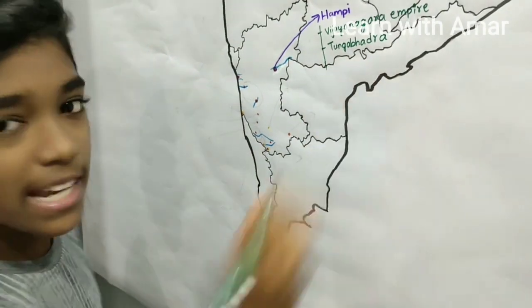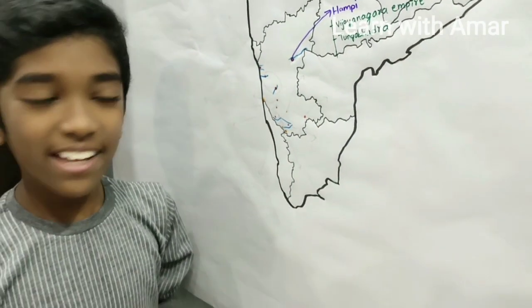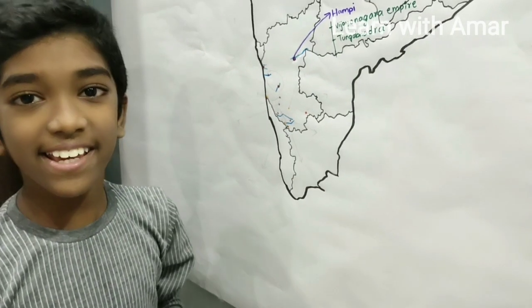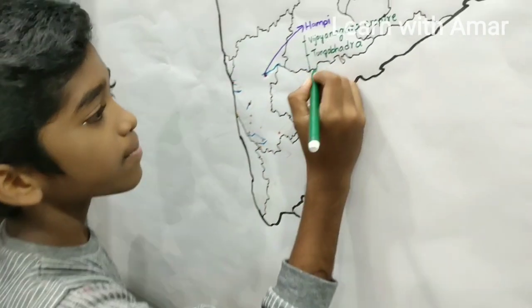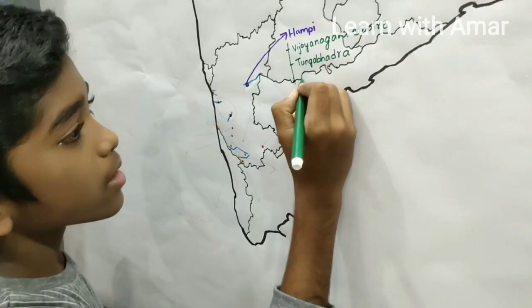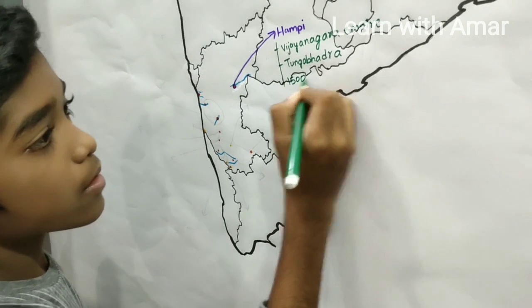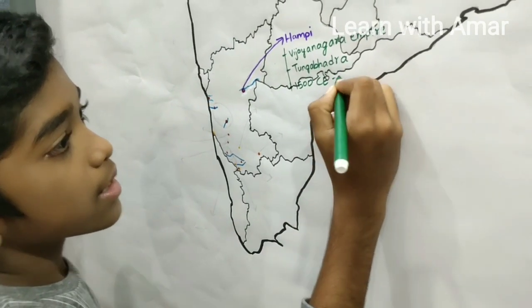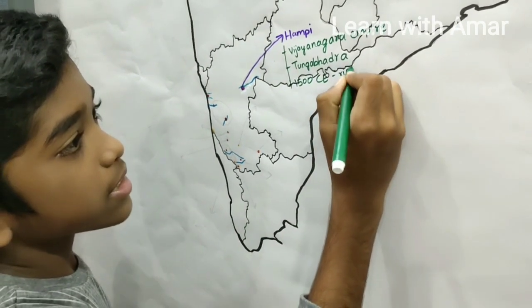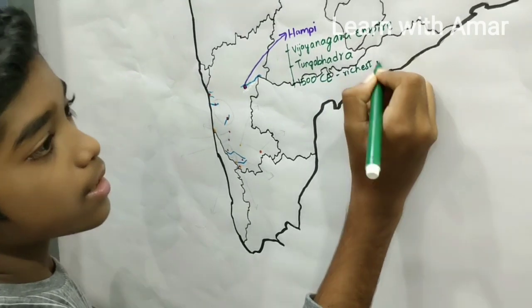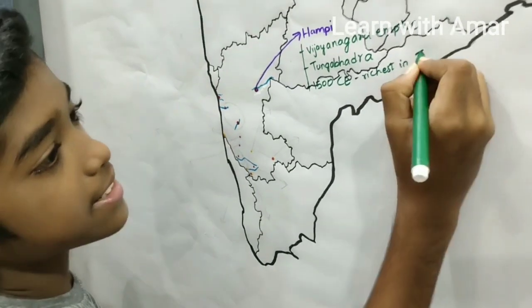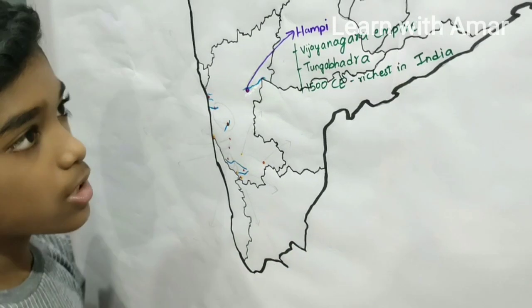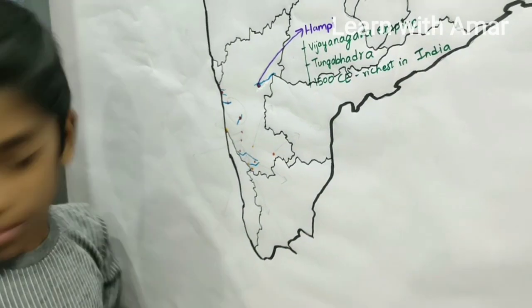And in about 1500 CE, it was the richest city in India. So that's it for Hampi.